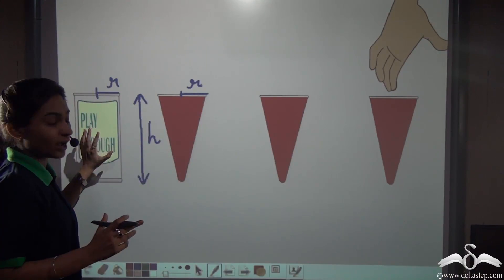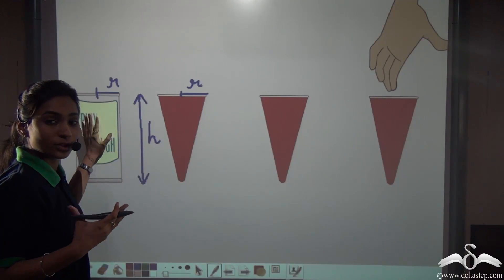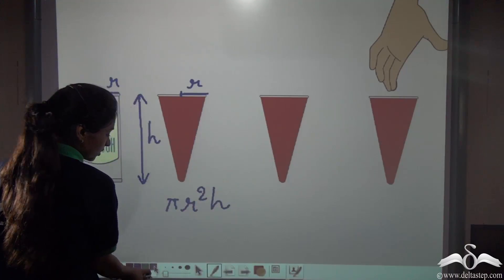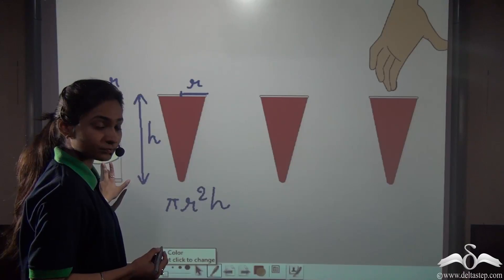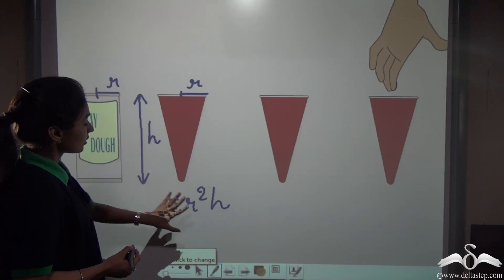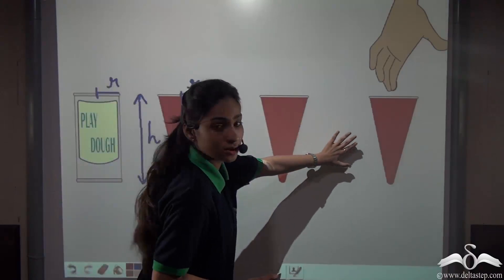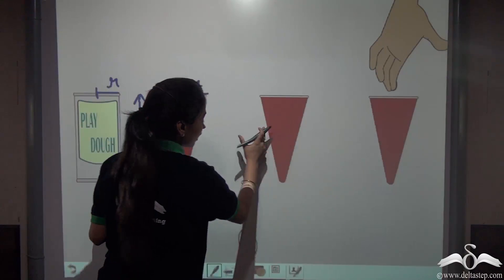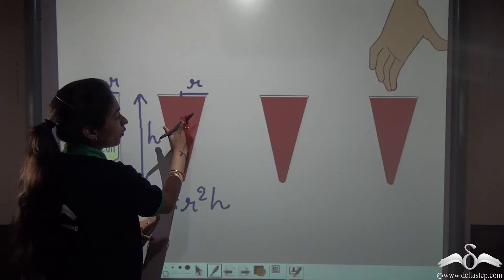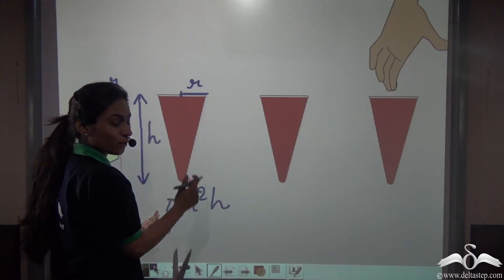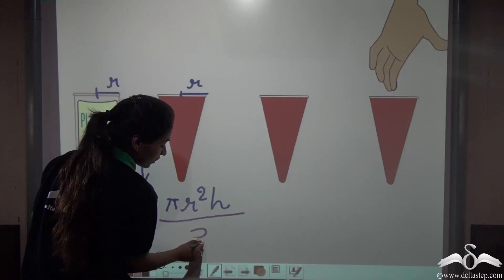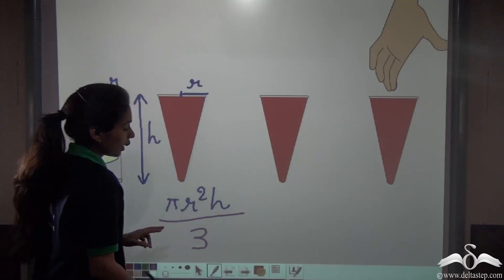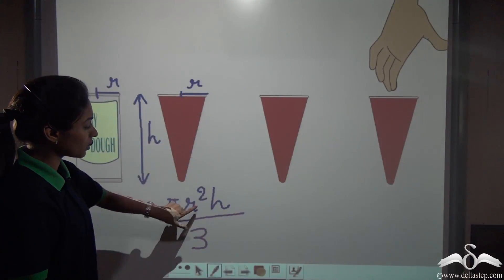Now those cones should have the same height and the same radius as that of the cylinder. The volume of the dough inside this cylinder can be calculated with the formula πr²h — this is the formula for the volume of a cylinder. Now I know that this volume can be filled up in three cones. So if the total volume of the dough in these three cones is πr²h, then the volume of one cone will be πr²h divided by three, because the total dough in this cylinder is divided into three cones.